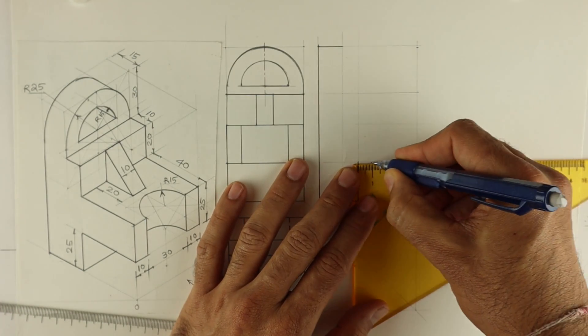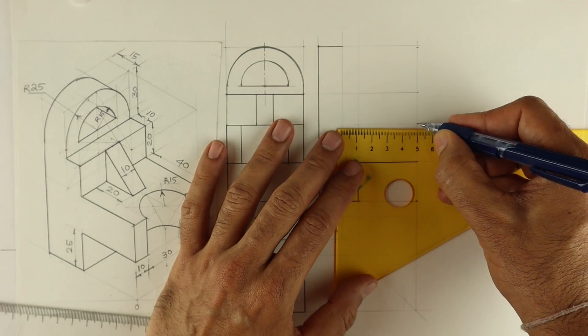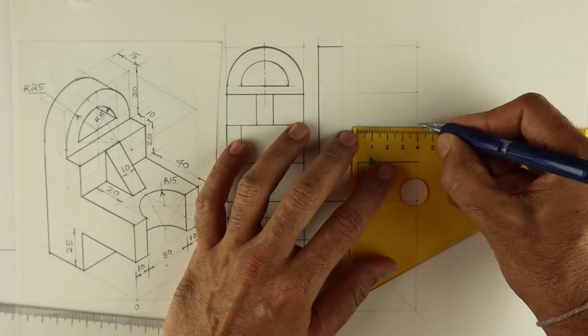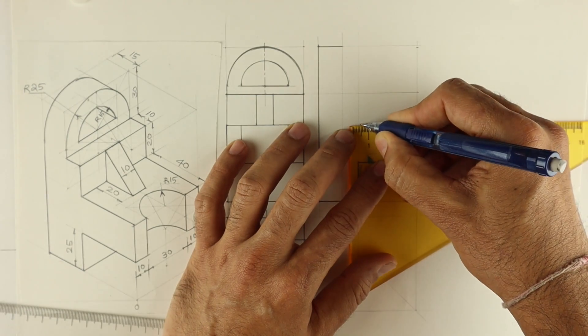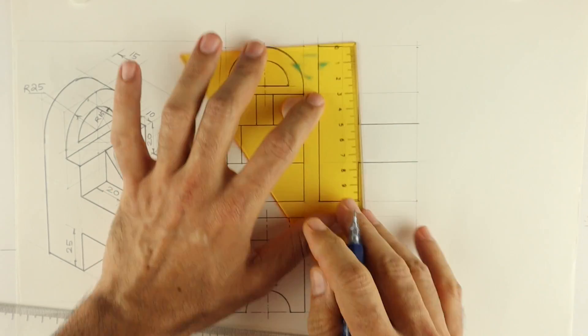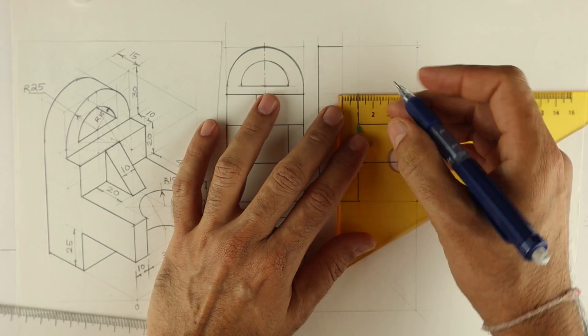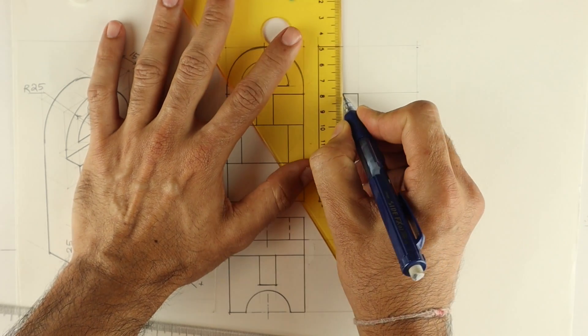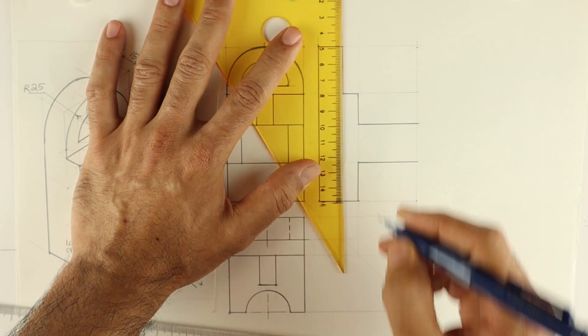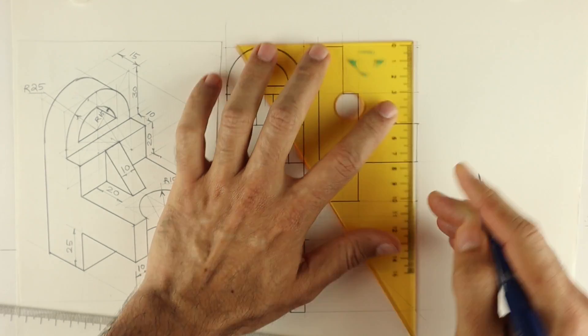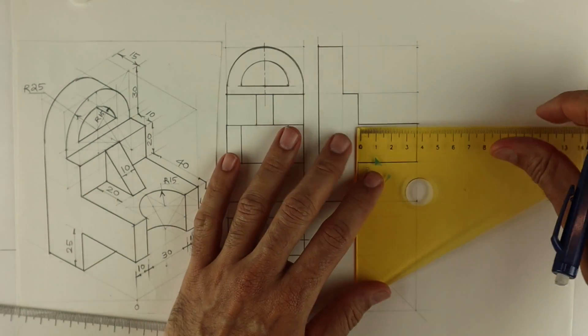Then again you draw 40. This is 40. Go up, then again you draw 10. This will be dark. This is 20.